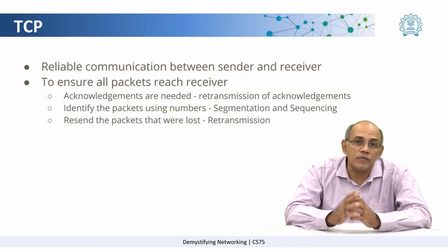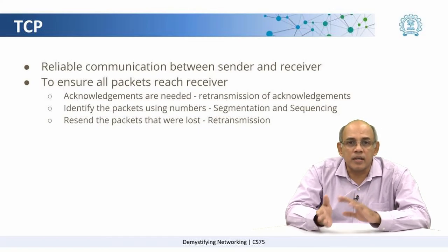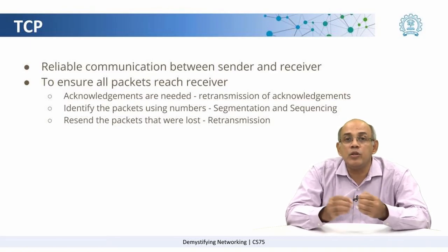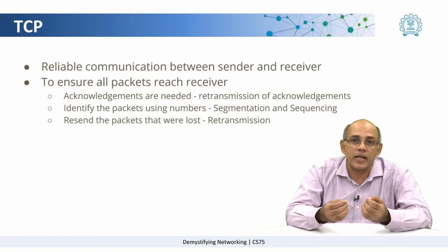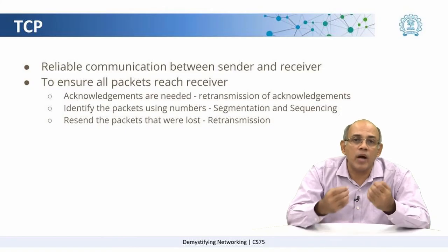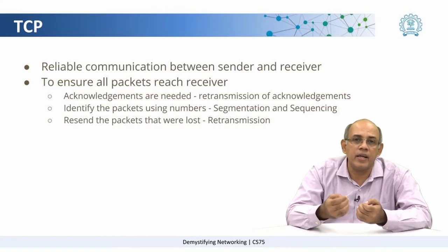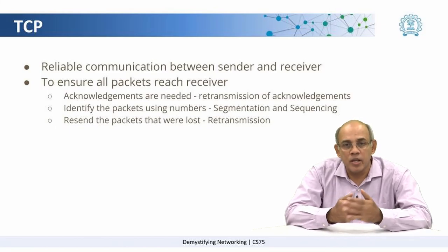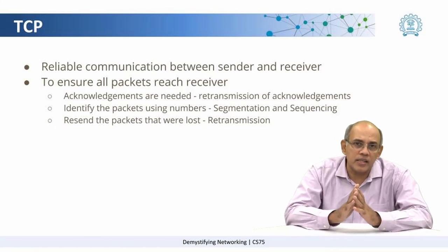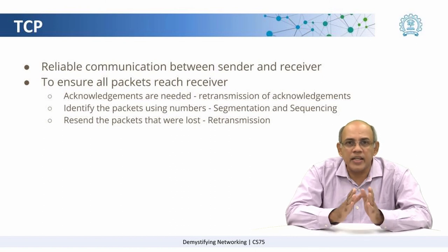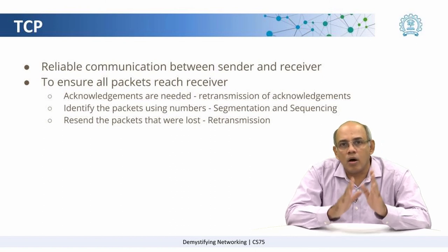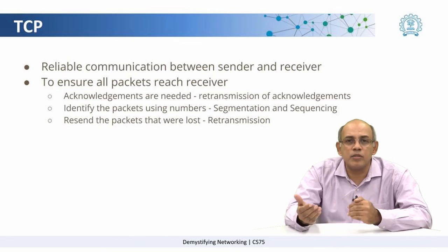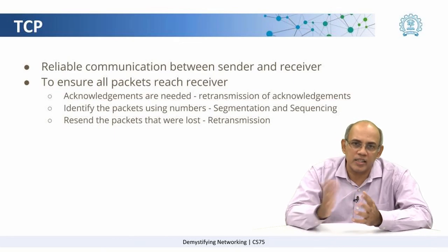As soon as you think of this idea of acknowledgements, the immediate next thought is that we need to number these packets — we need to be able to identify them in some way so that we know which acknowledgements have been received. So the two key ideas here are segmentation, or numbering of the packets, and then there is the notion of acknowledgements and retransmission. This is one part of what TCP does.